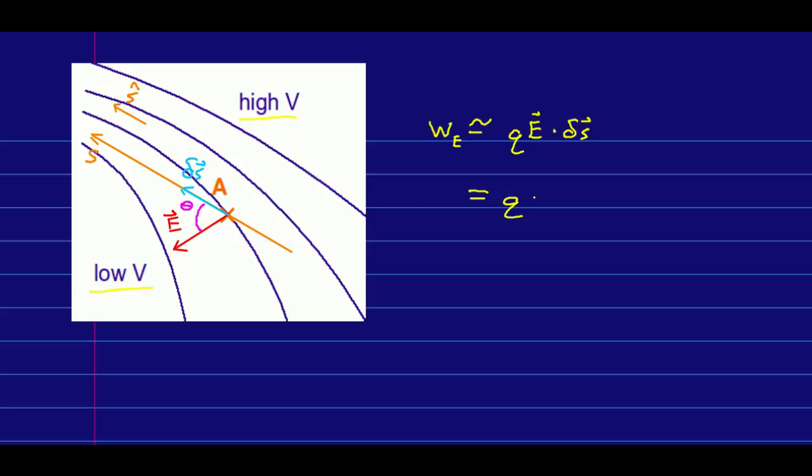That is just Q times the magnitude of E times the magnitude of delta S times the cosine of the angle between them. And E cosine theta is just the component of the E field along the S axis, what we would call ES. And so I'm going to write it that way.